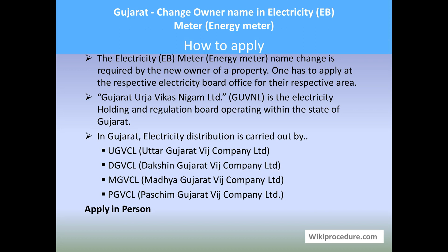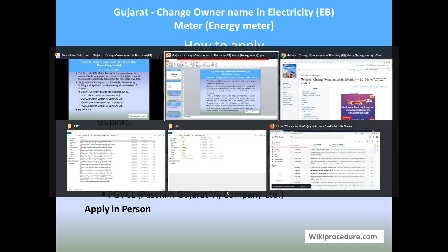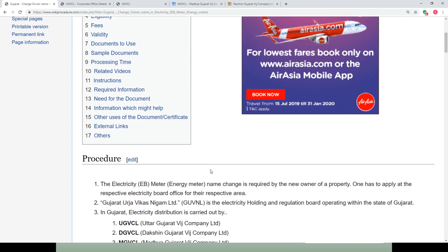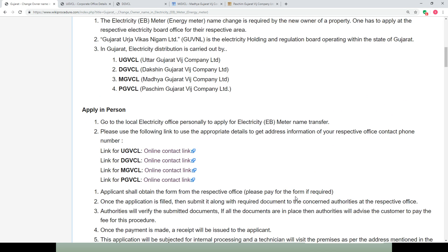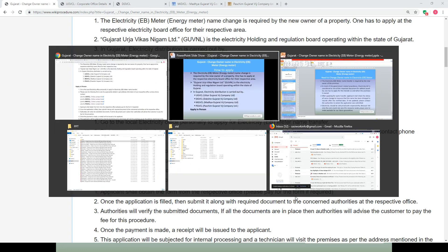The electricity meter name change is required by the new owner of the property. One has to apply at the respective electricity board office in their respective area. Gujarat Urja Vikas Nigam Limited (GUVNL) is the electricity holding and regulation board operating within the state of Gujarat. Electricity distribution in Gujarat is carried out by four major distribution boards: UGVCL, DGVCL, MGVCL, and PGVCL.